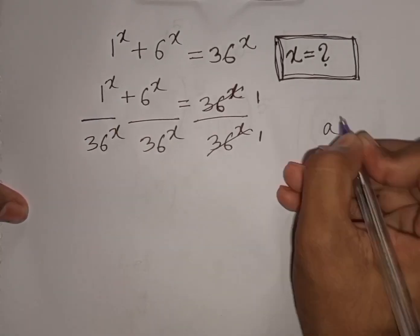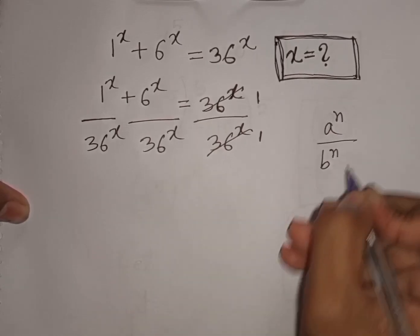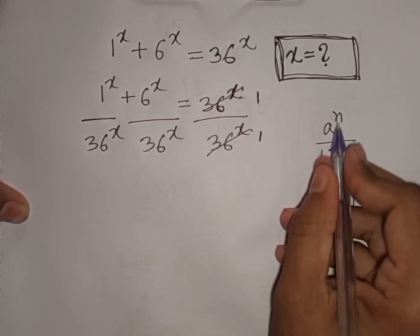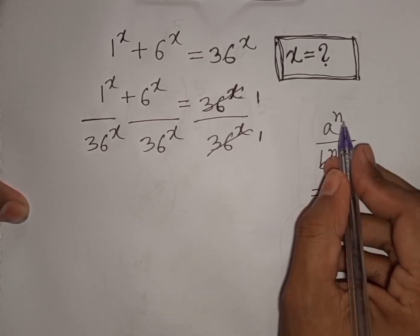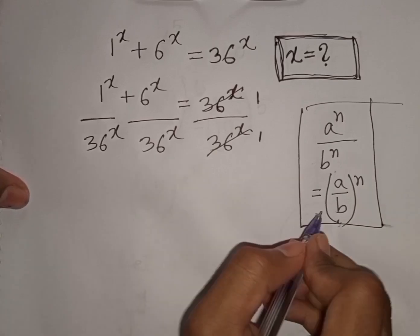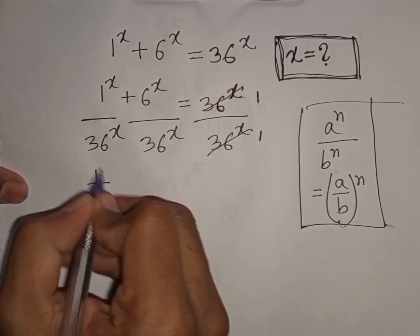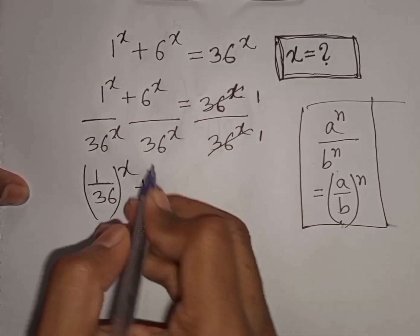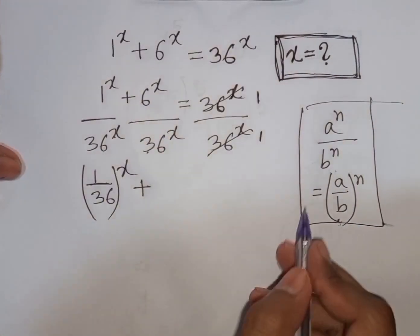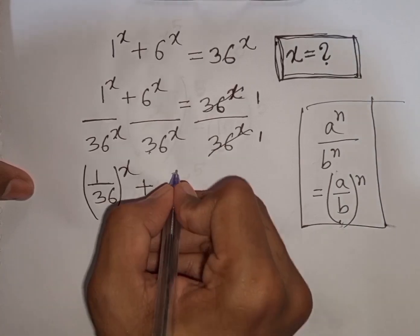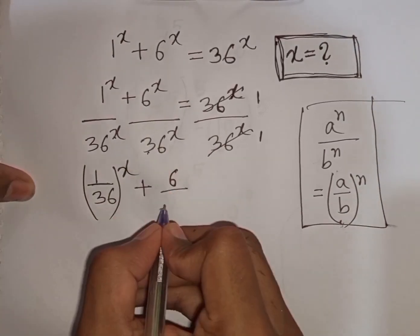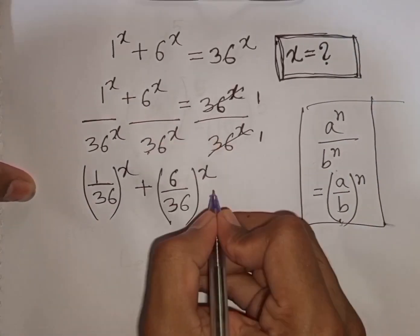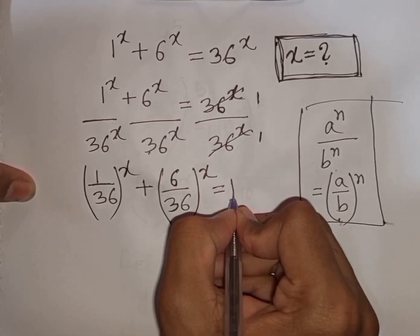Remember this exponent rule: a power n times b power n is equal to (a times b) bracket common power n. That means same power but different base. According to this formula we can write (1/36) power x plus (6/36) power x is equal to 1 divided by 1, that means it will be 1.